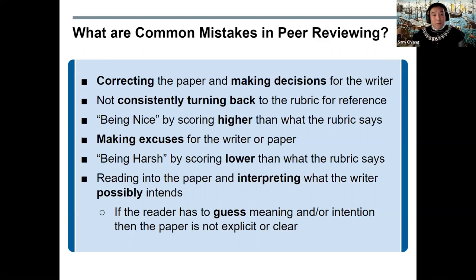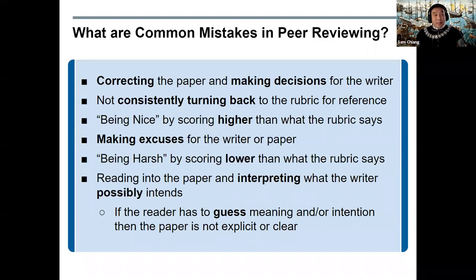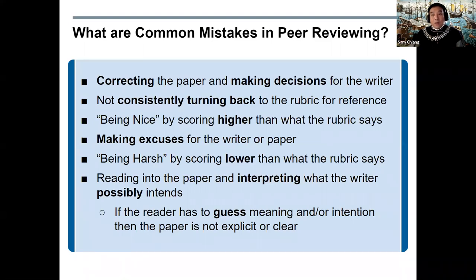Another pitfall is being nice by scoring higher than what the rubric says. This does no justice to your classmate — being nice to preserve good feelings in the moment is ultimately more harmful to the paper's integrity, score, and to the good feelings that come from success later. Similarly, making excuses for the writer or paper is a mistake. Our job as a reviewer is to point out what we see, not make excuses for what's there. That said, being harsh by scoring lower than what the rubric says is also a mistake, as it does not present an accurate reading and may encourage overcorrection, which is ultimately harmful.